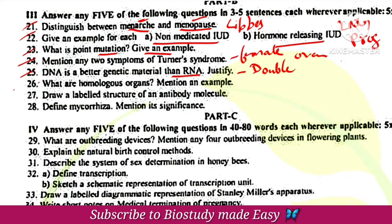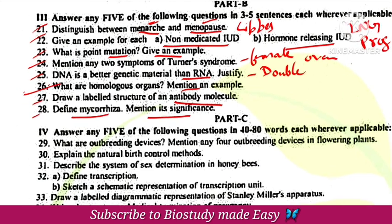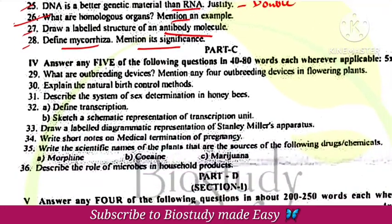Homologous organs — give examples. Draw a diagram of an antibody. Mycorrhiza is significant. Microbes in human welfare — almost all these questions are easy.